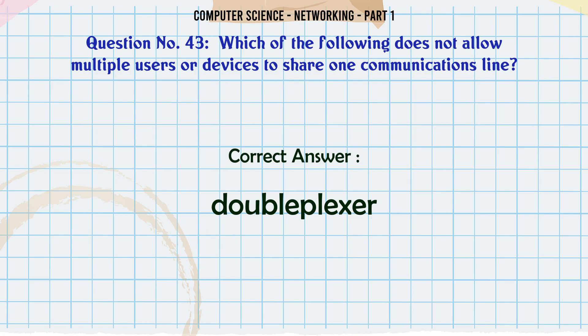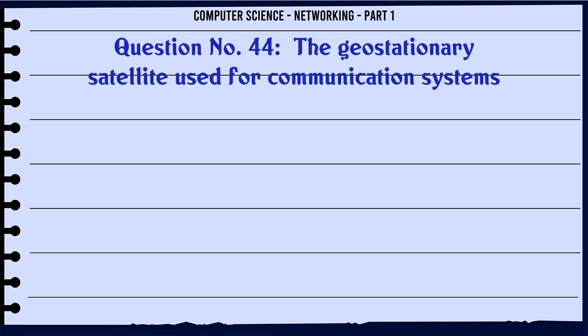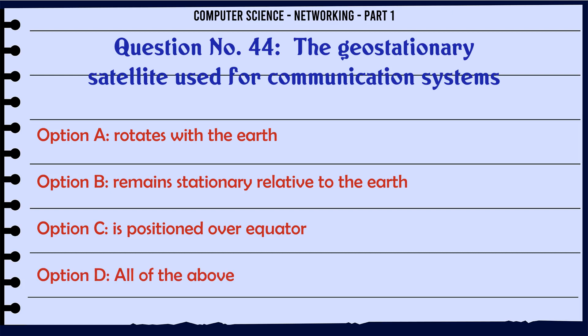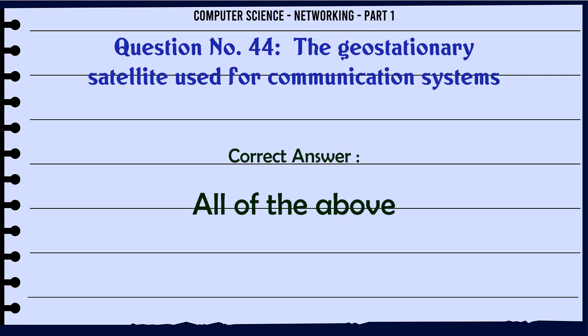The geostationary satellite used for communication systems: A. Rotates with the earth. B. Remains stationary relative to the earth. C. Is positioned over the equator. D. All of the above. The correct answer is: All of the above.